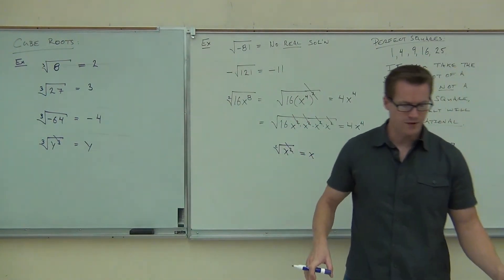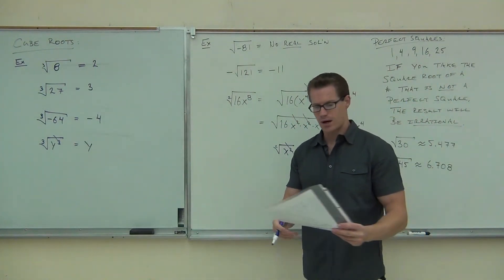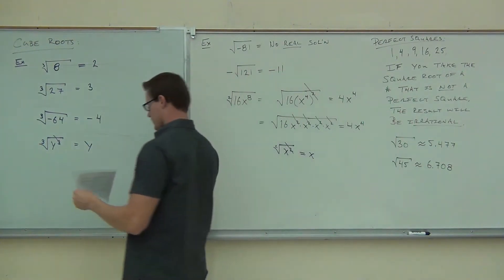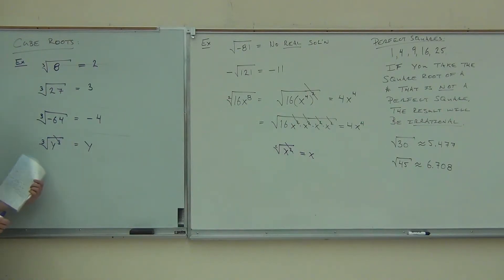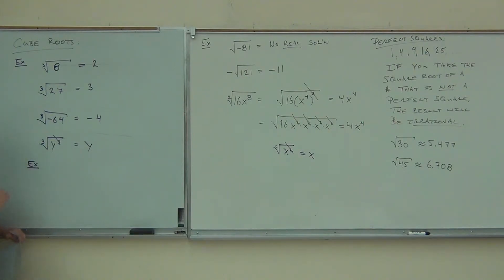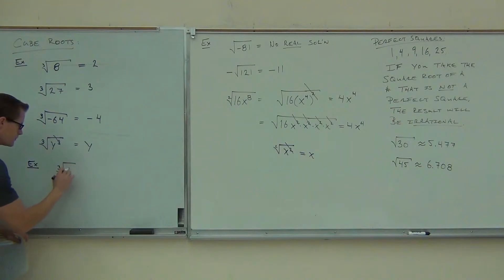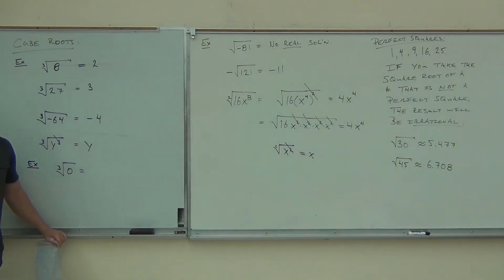That works for every root we're going to see. Let's try some more. Cube root of zero? Zero, because zero times zero times zero gives you zero.